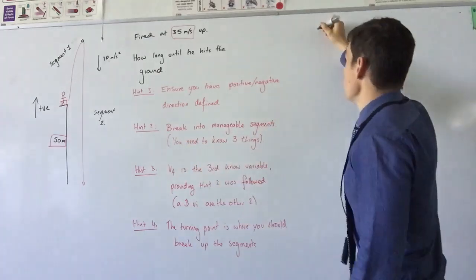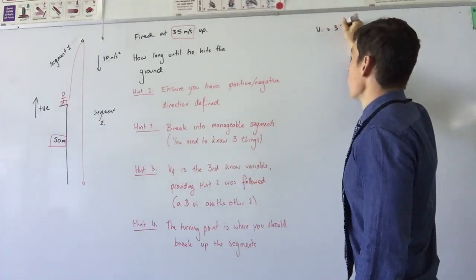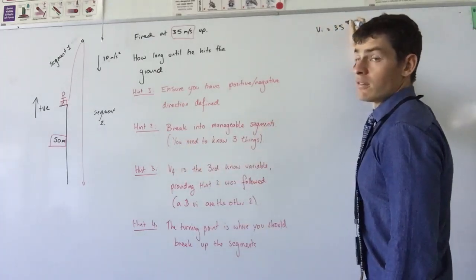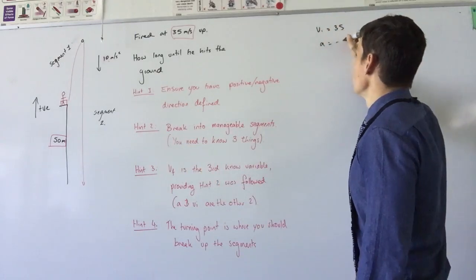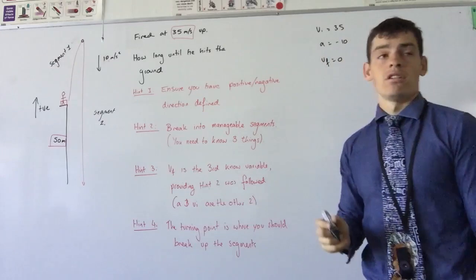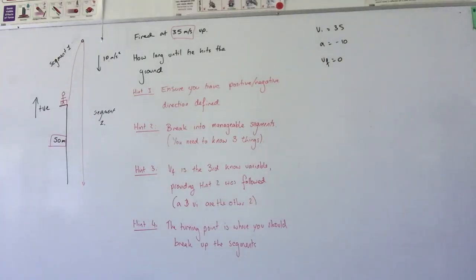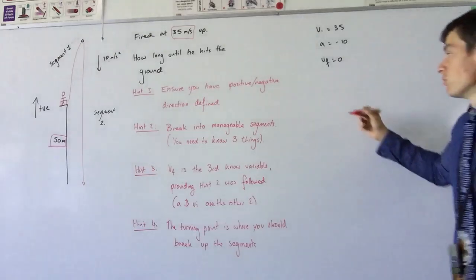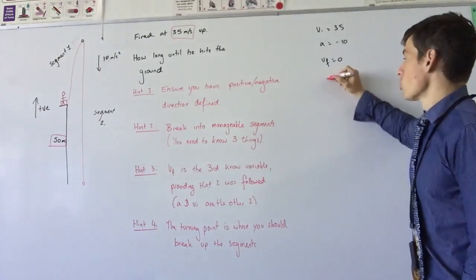So now I know VI: 35. Is it positive or negative? Positive. A: negative 10. VF: zero. Now that I know three things, I can find my fourth variable. I want it to be time.